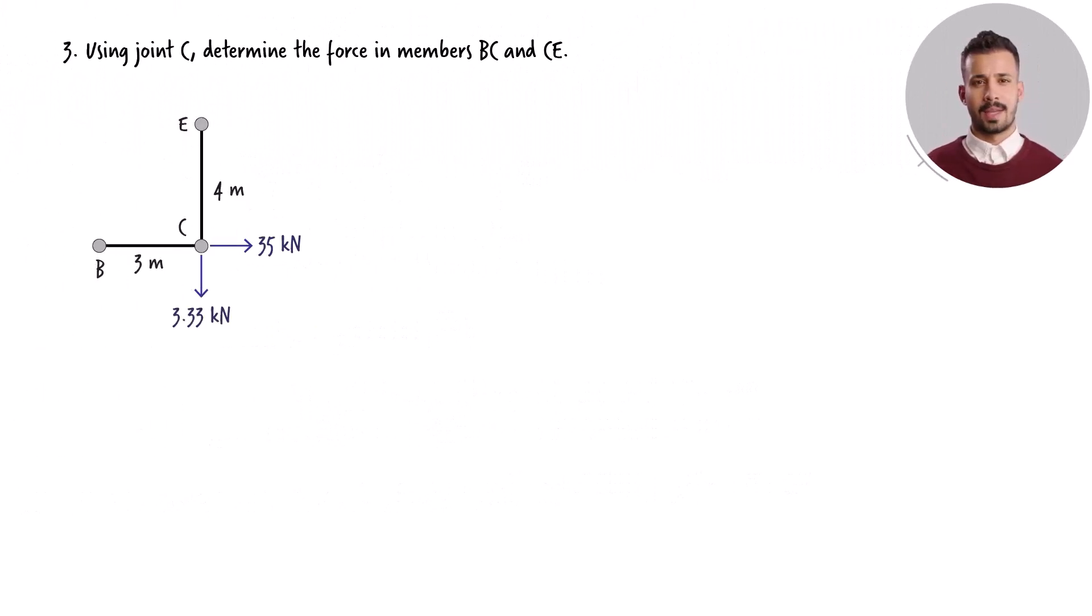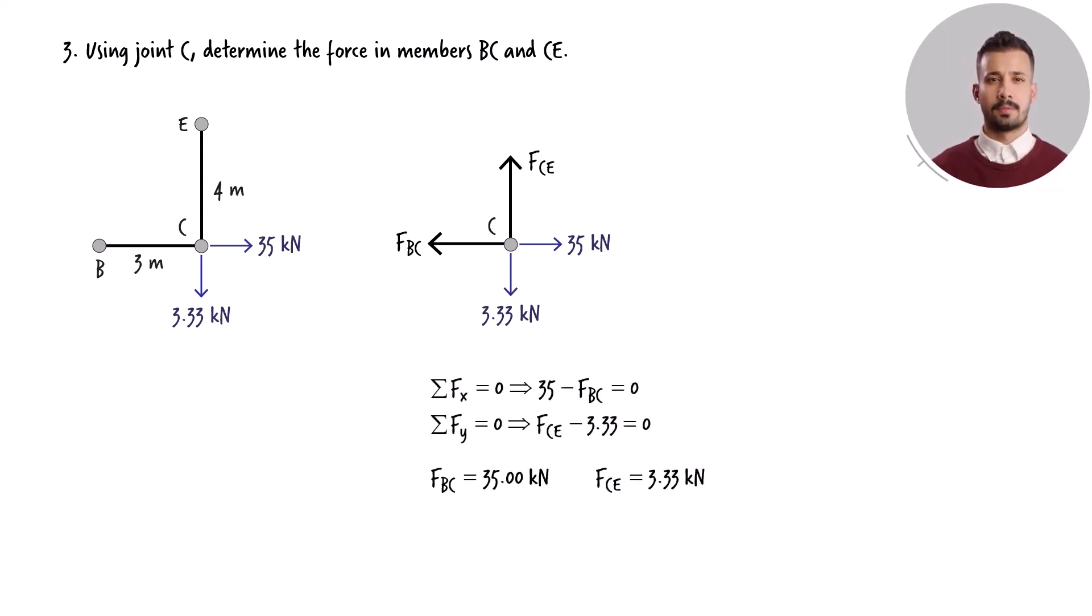Joint C connects members BC and CE. Here is the free-body diagram of the joint showing the member forces. The equilibrium equations for the joint yield the results. So both members BC and CE carry a tensile force.